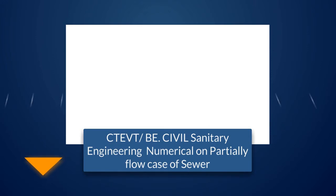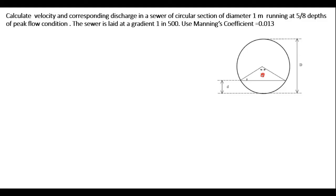Now let us work through a numerical problem of a partially flowing condition sewer. We are asked to calculate the velocity and corresponding discharge in a sewer of circular section of diameter 1 meter, running at 5/8 depth under peak flow conditions. The sewer is laid at a gradient of 1 in 500, and Manning's coefficient n equals 0.013.